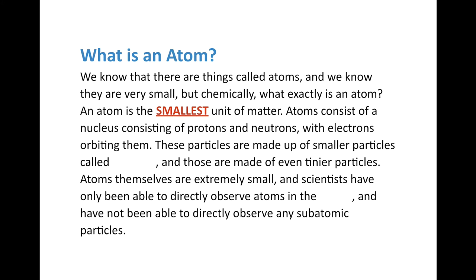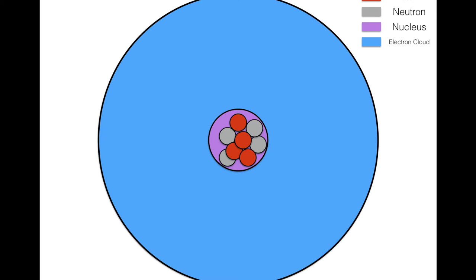Atoms consist of a nucleus consisting of protons and neutrons, with electrons orbiting them. We have the protons in red, the neutrons in gray — they're stuck together and form the nucleus, and the general region I have colored purple. Outside of it is the electron cloud shown in blue — this is where the electrons orbit around the nucleus. Go ahead and color this in and label everything.